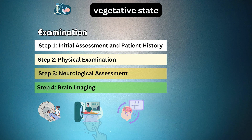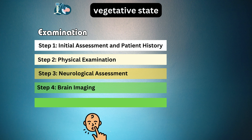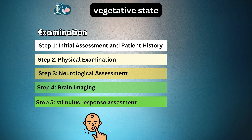Step 5: Stimulus response assessment. We observe the patient's responses to different stimuli — verbal commands, visual cues, tactile sensations, and auditory stimuli — to gauge their level of consciousness.